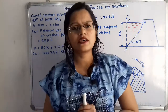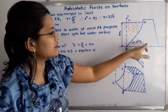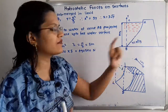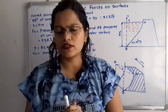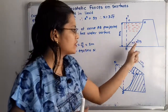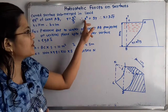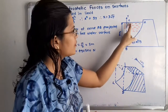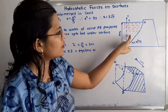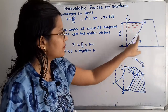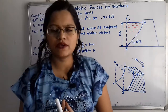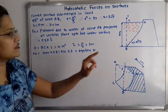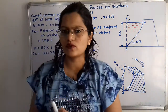Let us first understand the given diagram. Here is the structure of the dam which has curve AB, and the equation of the curve y = x²/9 is given. We can also write this as x² = 9y, and the simplified form is x = 3√y. The water is in contact with curve AB. The height of the free water surface is 10 meters and the width of the dam is 1 meter.